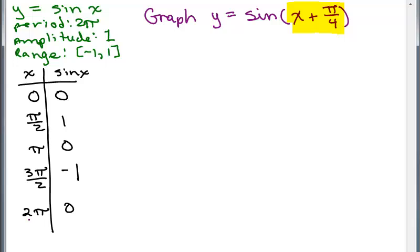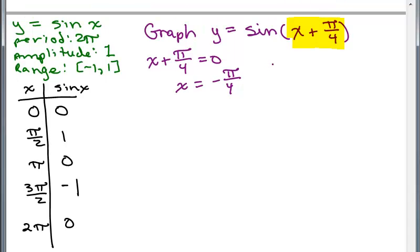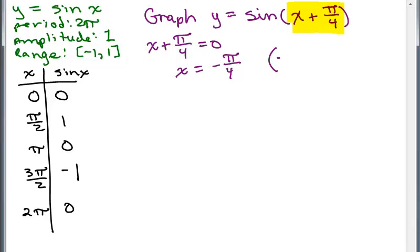We need to choose the right ordered pairs, and that means we have to find the simplest values for the x coordinates. I'm going to start by asking: what would make that argument 0? Whatever is in parentheses, set it equal to 0, and we get x equals negative π/4. So if I put negative π/4 in for x in these parentheses, I get the sine of 0. So one of the ordered pairs is (-π/4, 0).